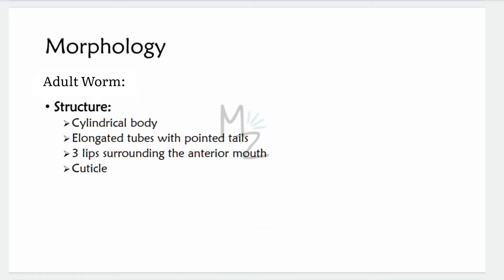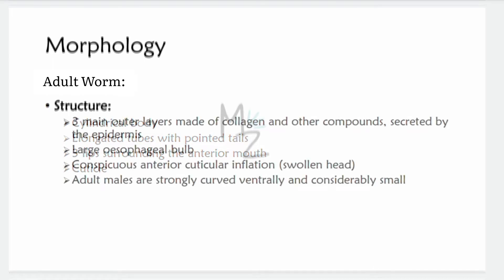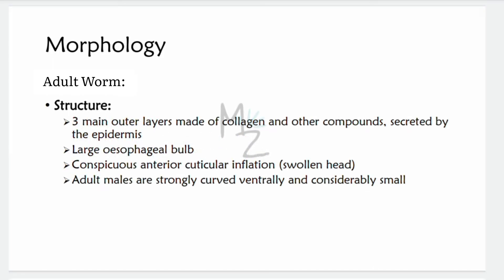Adult worm: it has a cylindrical body with elongated tubes and pointed tails. Adult worms are both male and female — they live together but are separated, not joined. Nematodes are not hermaphroditic like trematodes. Three lips surround the anterior mouth, and the worm has a cuticle — a highly resistant protective layer made of collagen and other compounds secreted by the epidermis. The worm also has a large esophageal bulb and conspicuous anterior cuticular inflation, i.e., a swollen head.